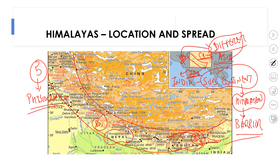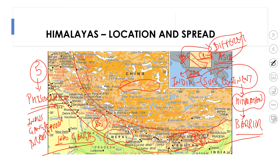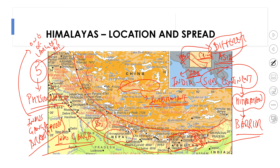To the north of Himalayas is the famous Plateau of Tibet, while to the south is the most fertile and largest plains of the world — the Indo-Ganga plains, formed by the Indus river in the west, Ganga river in the middle, and Brahmaputra river in the east. The Plateau of Tibet is an inter-mountain plateau, sandwiched between the Himalayan mountain system in the south and the Kunlun Shan mountain system in the north, present in China.